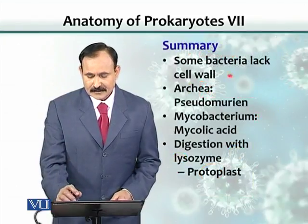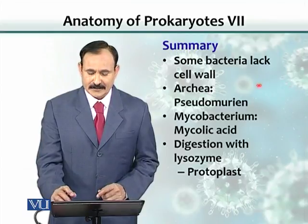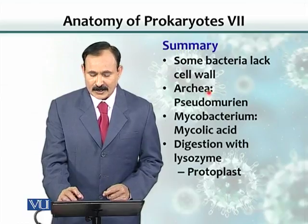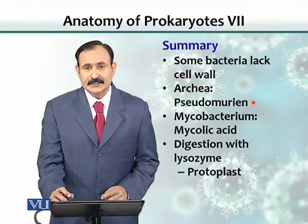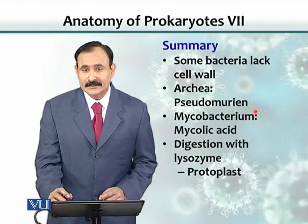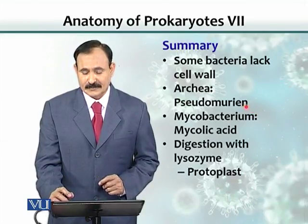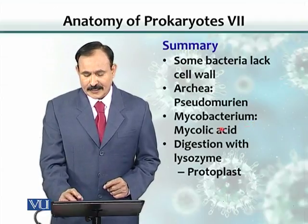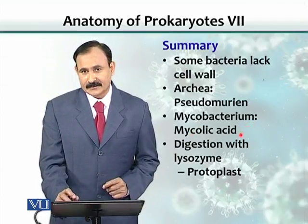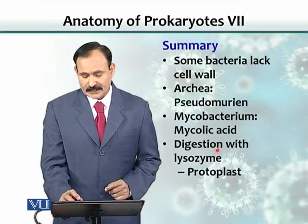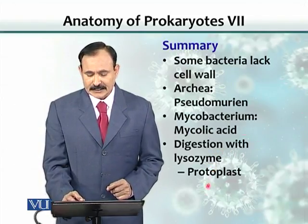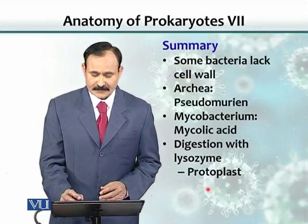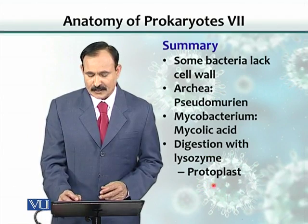In summary: some bacteria inherently lack a cell wall. Archaea do not have a typical cell wall, but they do have a peptidoglycan-like structure called pseudomurine. Mycobacterium and Nocardia have mycolic acid as a special component. Digestion with lysozyme leads to cells without a cell wall — kind of spherical structures — which we call protoplasts.